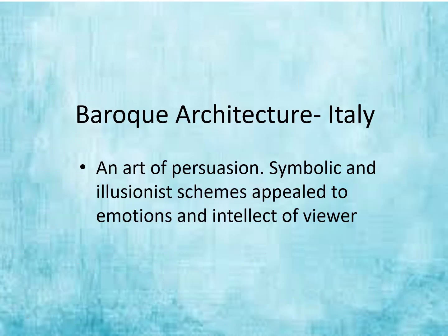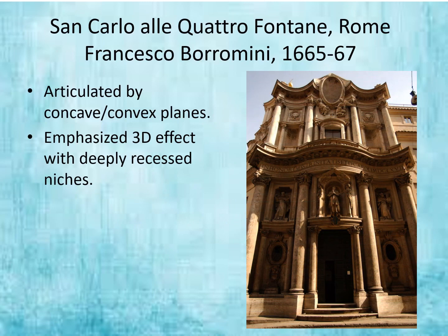Now, Baroque architecture in Italy—I love this quote: 'an art of persuasion,' where symbolic and illusionist themes appealed to the emotions and intellect of the viewer. Here we have San Carlo alle Quattro Fontane, Rome, by Francesco Borromini, 1665 to 1667. You can already see this is not like a typical building we have looked at before. There is a high interest in curvature—concave, convex, undulating curves. This building has a lot of theatricality and an interest in welcoming and urging you into the space while also jutting out into your space. This undulation creates a very three-dimensional quality to the structure with deeply recessed niches.